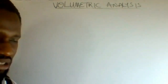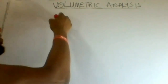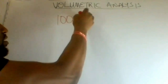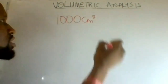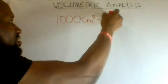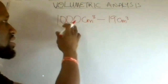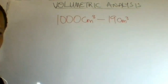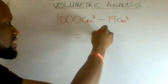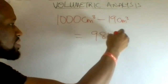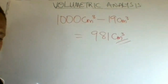Now from the question, we were initially given 1000 cm³ of HCl, but 19 cm³ was used in the neutralization. So 1000 cm³ minus 19 cm³ gives us 981 cm³ of acid unused.